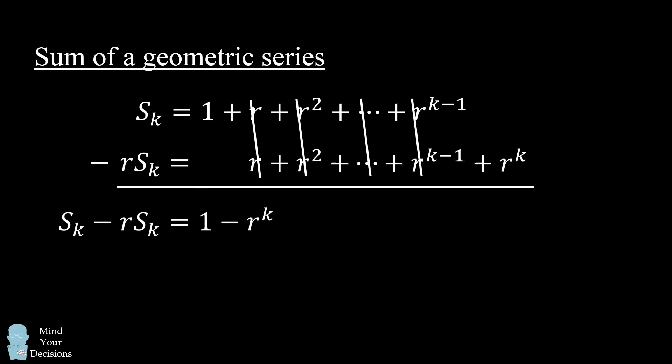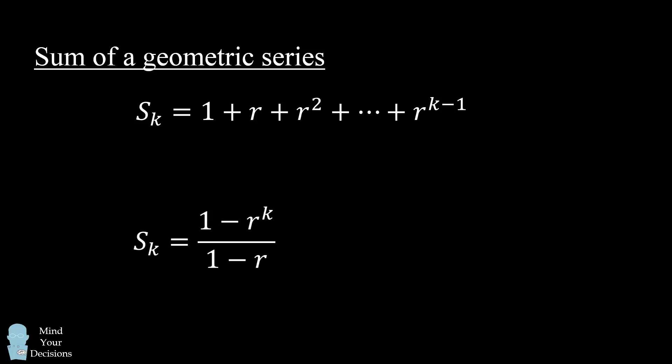We now factor s sub k on the left hand side, and then we divide both sides by 1 minus r. And that's the formula that we want. The sum of a geometric series will be equal to a fraction where the numerator is 1 minus r to the power of k, and the denominator is 1 minus r.